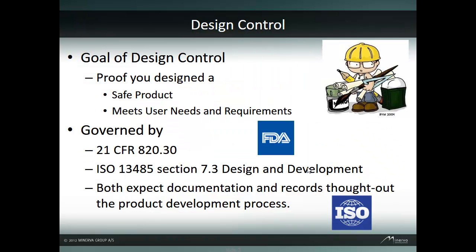The goal of design control regulations is to prove that you have designed a safe product and that it meets user needs and fulfills all the requirements. The specific FDA regulation that talks about design control is 21 CFR 820.30 and ISO 13485 Section 7.3 Design and Development. Both expect documentation and records of design throughout the product development process.